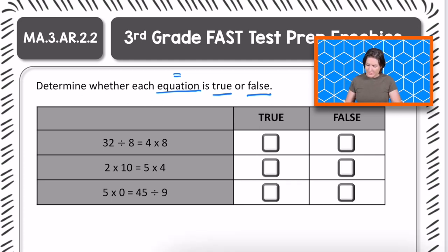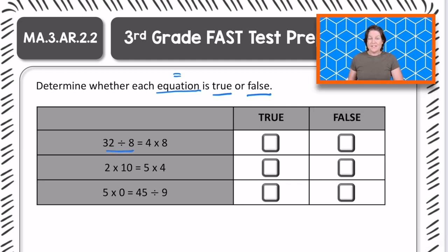Okay, so you can help me out with this one. We've got this side over here. It says 32 divided by 8. 32 divided by 8 is what? 4, right? Good. And on this side, 4 times 8 equals what? 32. Now, is 4 equal to 32?